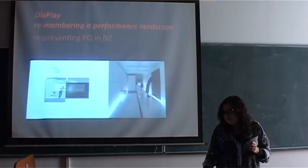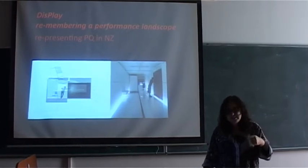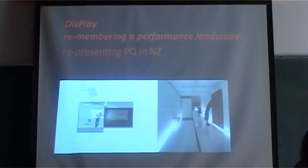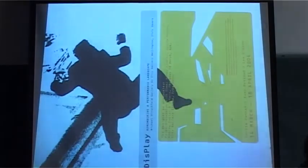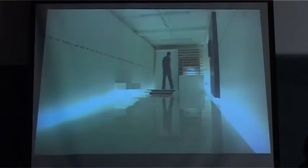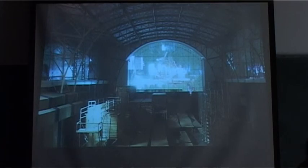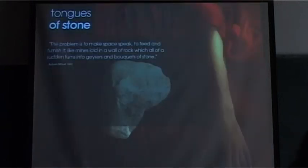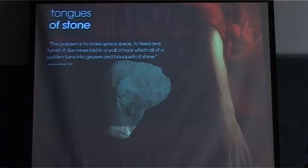We then took that back to New Zealand and presented that exhibition in an art gallery, where we called it Display: Remembering a Performance Landscape. We put it into a white gallery, and within that white gallery was a black box diorama that had the model in it, and little models embedded within the space. When you looked in through the hole at the black box, you would see the model with projections of the performance on it. Again, what we were trying to do was create a landscape within which people passing through this long thin gallery would become a performer on this abstracted landscape. Carol and I then, from working together on the Tower of Touch, started to collaborate together, and we created a project called Tongues of Stone, or Making Space Speak — based on Antonin Artaud's statement that 'the problem is to make space speak, to feed and furnish it like mines laid in a wall of rock, which all of a sudden turns into geysers and bouquets of stone.'